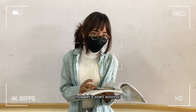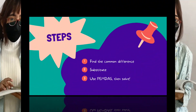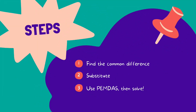Now let's start solving! I'll first show you the steps. We are going to have three steps in solving this. First, find the common difference. Second, substitute. Third, use the acronym PEMDAS. Then solve! It is that easy!